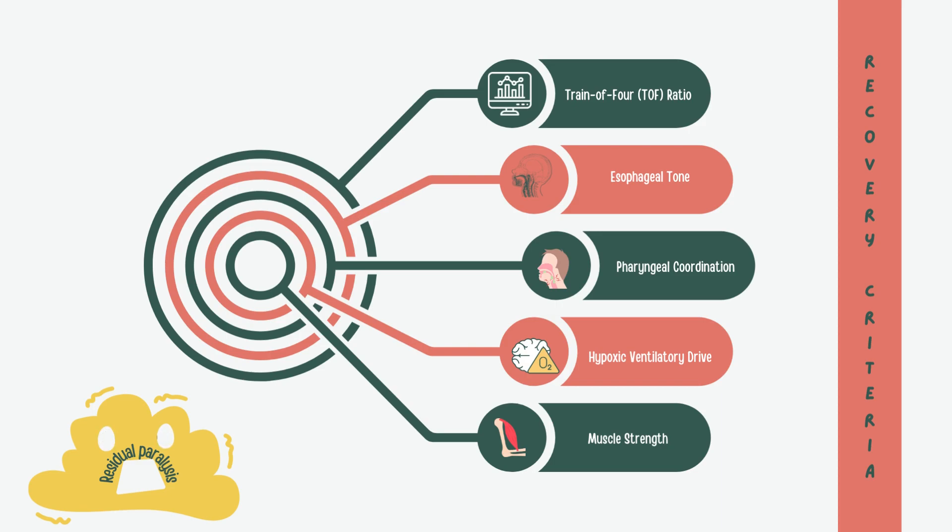First, we have the train-of-four ratio. Think of it as a gauge for muscle recovery. We want it to be at least 0.9 before we can safely remove the breathing tube. It measures how muscles respond to nerve stimulation and a TOF ratio below 0.9 can lead to difficulties in speaking, swallowing.